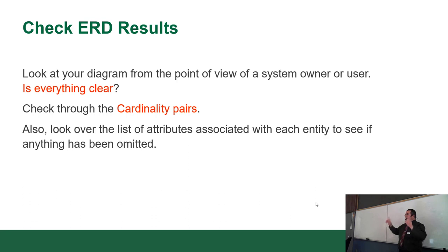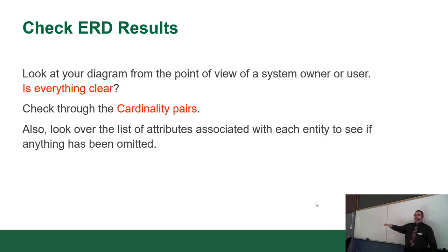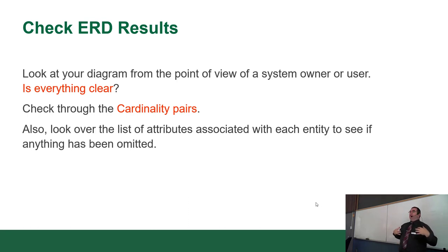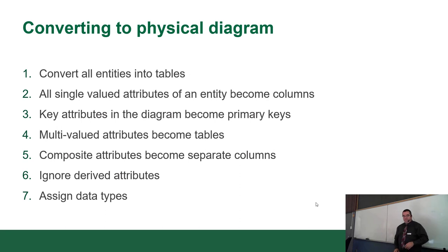Double-check your diagram against the documentation to make sure you haven't lost any attributes. You don't want to JPEG your data — JPEG is lossy, and every time you process it you lose information. By the time you're done diagramming, everything identified with the other party must be mapped and nothing lost. Then convert to a physical diagram.